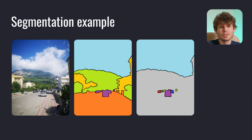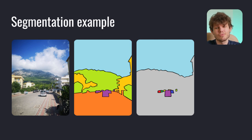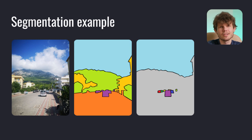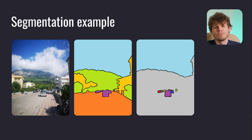Sounds easy, right? Well, not that easy if you think about it a bit more. Let's have a look at some outdoor pictures. There are skies, mountains, trees, cars, homes, and the road — a lot of objects. Which one of these two segmentations will be more appropriate, the left or the right? Well, the answer is it completely depends on the task you are trying to solve.